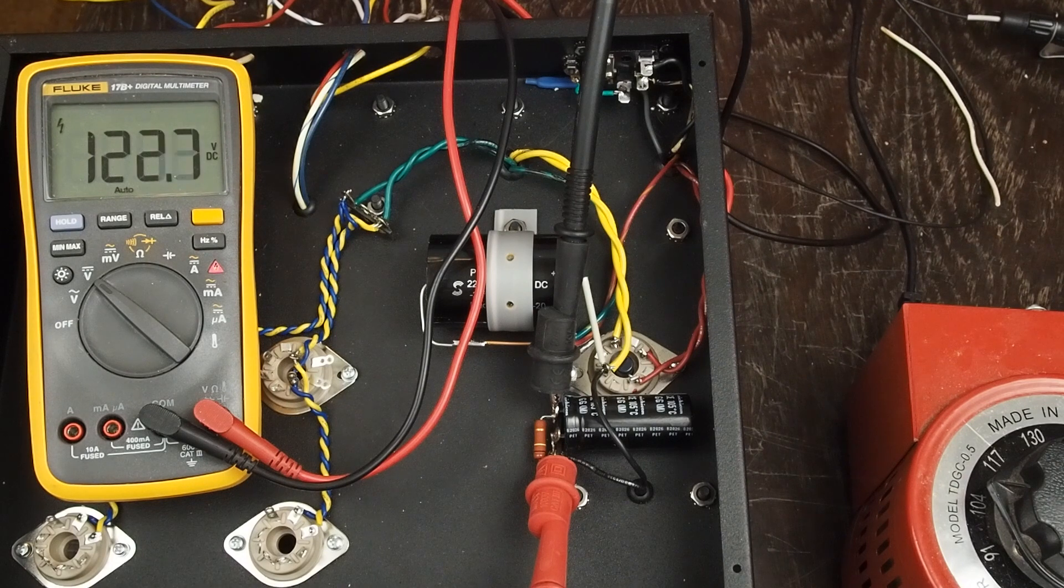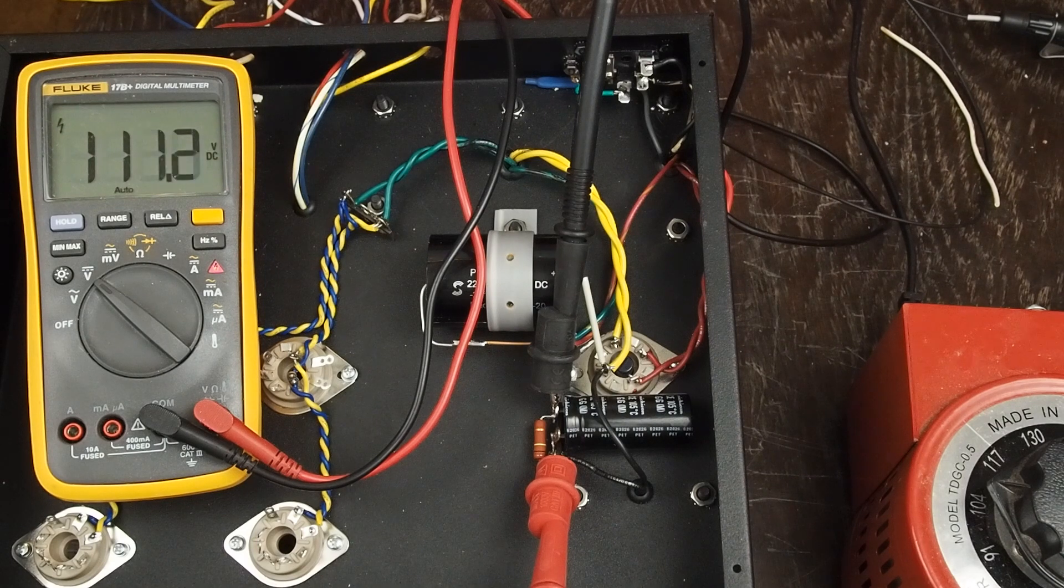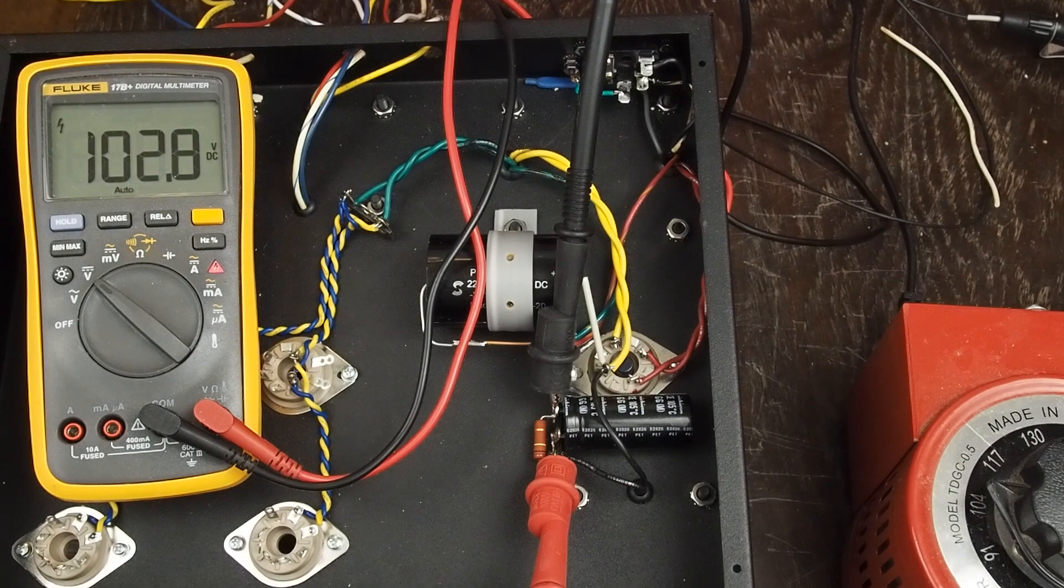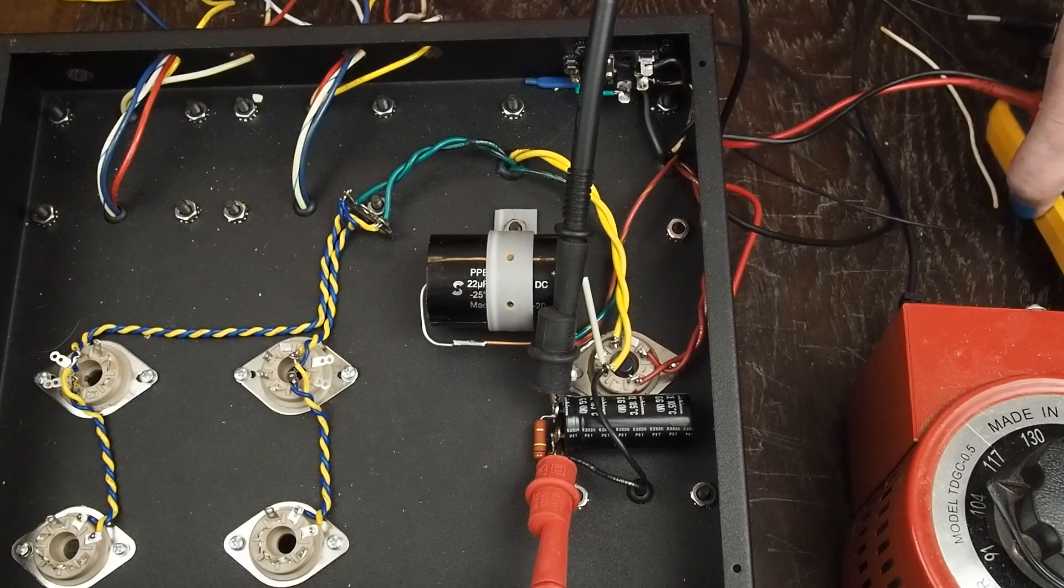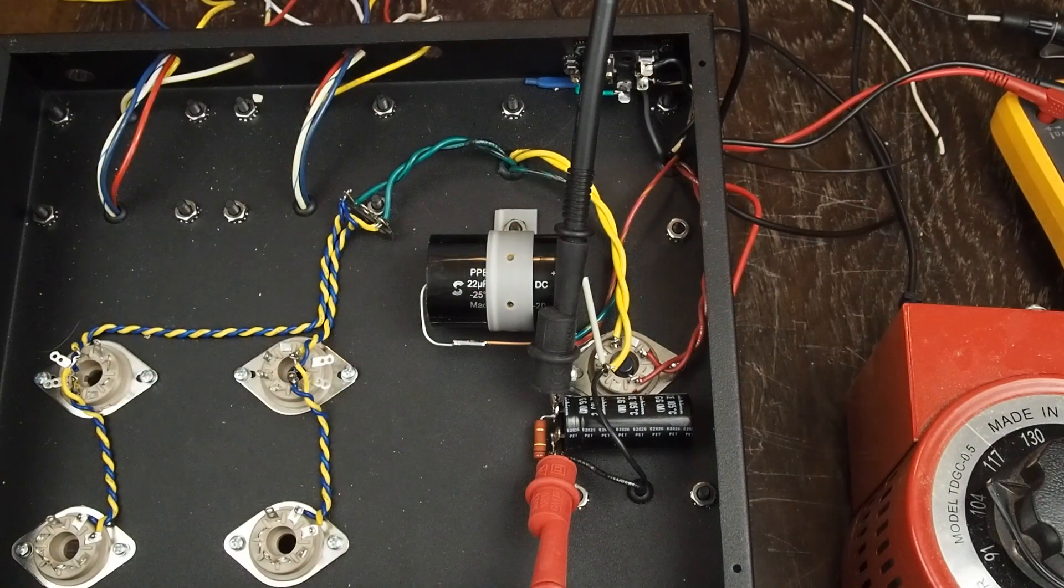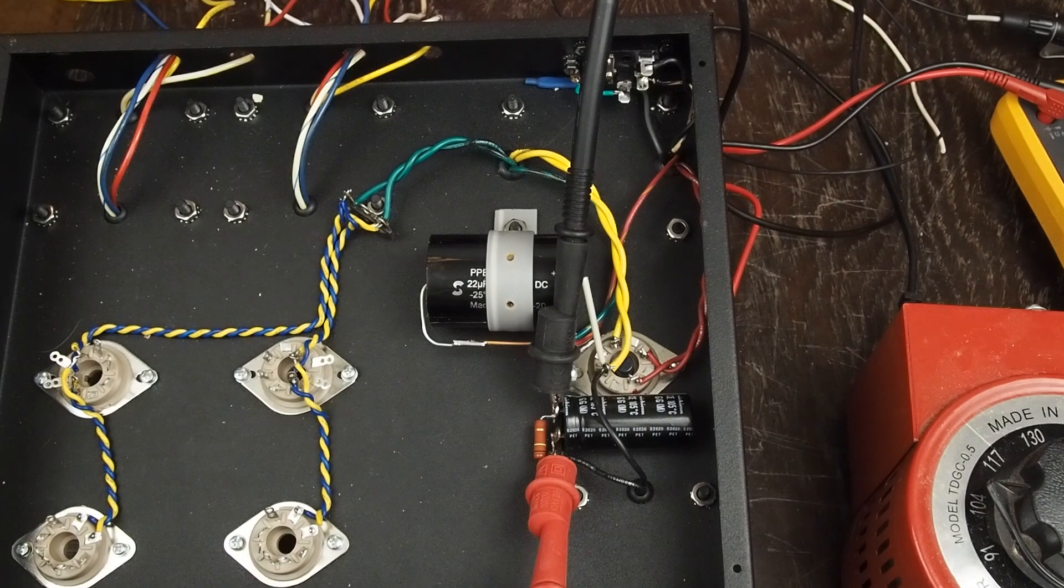So before we do anything else with the amp, I'm going to go ahead and let the voltage come down and I'm going to edit this out and we'll come back when we're ready to put the main all the rest of the tubes in and see if we have heaters glowing to make sure that we have the right pins connected to the 6.3 volt heaters. Once we've done that we know the power supply is working like it's supposed to.